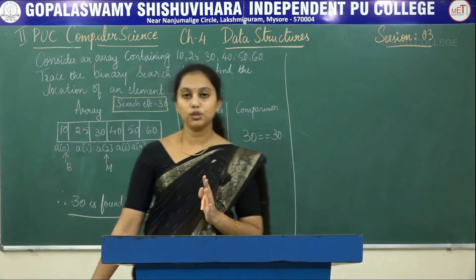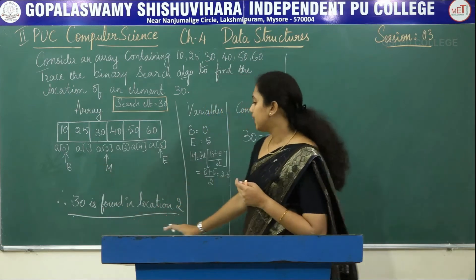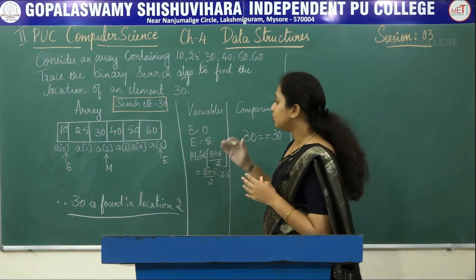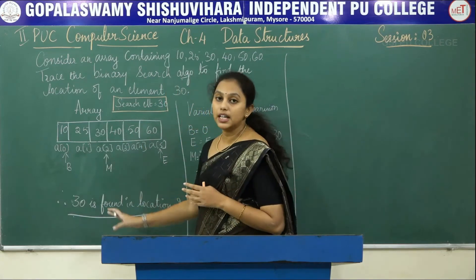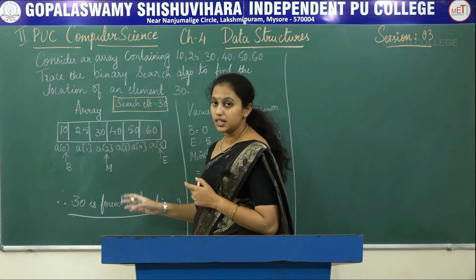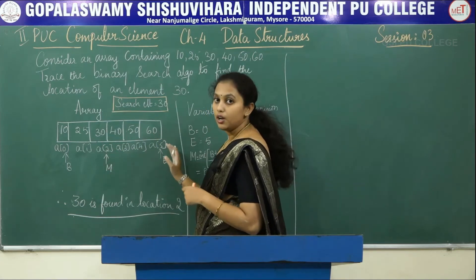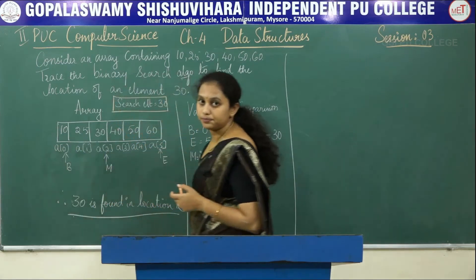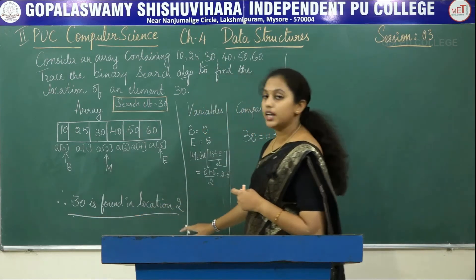Hence 30 is found in location 2. If the element is found we print its location. If not found, we check whether the search element is greater than or less than the middle element — if greater, we search to the right; if less, we search to the left.